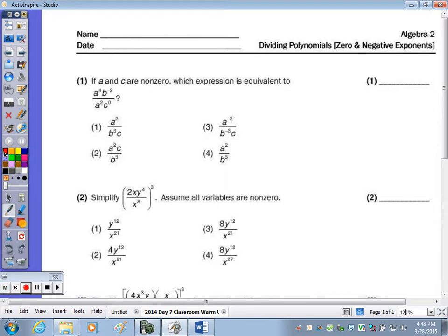Well, any time you see c to the zero, c to the zero is equivalent to one, so it's really a to the fourth b to the negative third divided by a squared, because a squared times one is just a squared. So now I do have like bases, so we can divide, and we end up with a to the four minus two, which is two, b to the negative three.